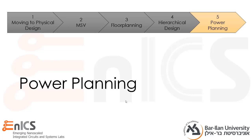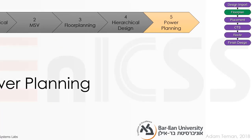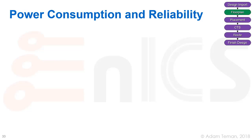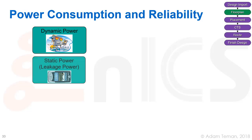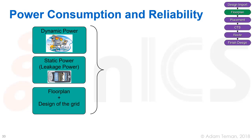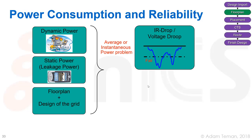We'll finish our lecture with a bit about power planning. Remember: we have dynamic power, static power or leakage, and the floorplan and design of the grid — all of this goes into our power consumption and reliability planning. The first problem is average or instantaneous power, called IR drop, where I is current and R is resistance, so IR is a voltage drop.